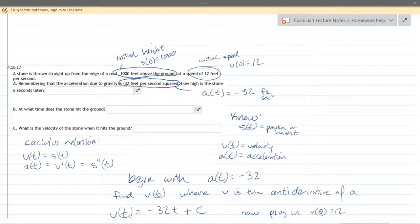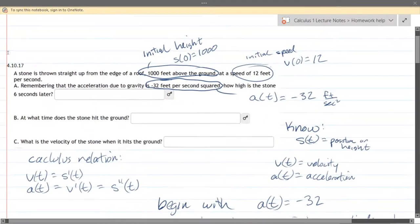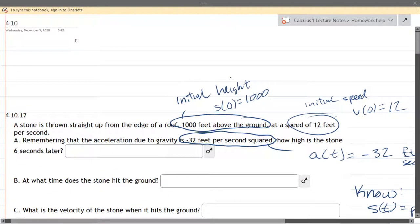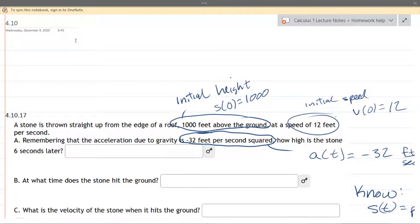We're doing anti-derivatives now and we're looking at number 17. In this problem we have a stone thrown up from the edge of the roof, a thousand feet above the ground at a speed of 12 feet per second. Remember the acceleration of gravity is negative 32 feet per second squared, and it's negative because it's down.